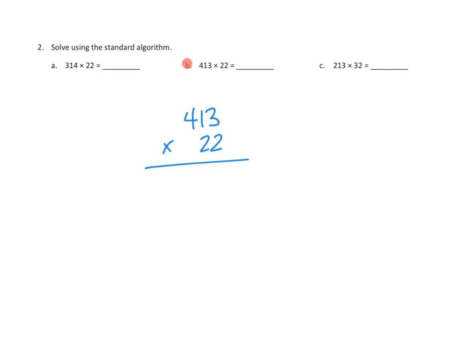So the first thing I need to do is I need to multiply 2 times this number. 2 times 3 1s would be 6 1s. 2 times 1 10 would be 2 10s. And finally, 2 times 4 100s would be 8 100s.